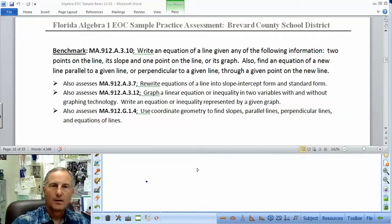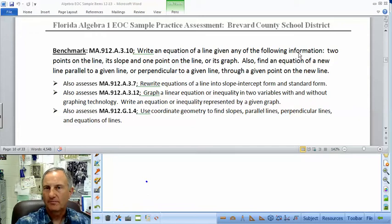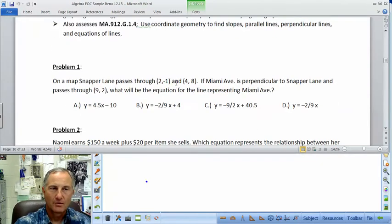Alright, picking up with Section 3.10. In this section we'll be writing equations of a line, giving the following information: two points on the line, slope and a point, or the graph. Then we can write the equation. Also, we want to find the equation of a new line that's parallel or perpendicular to a given line through a given point on the line. And then writing equations, graphing lines and inequalities and slopes, stuff we've already been doing, we'll be throwing in here with this. So with that, let's start on problem one.